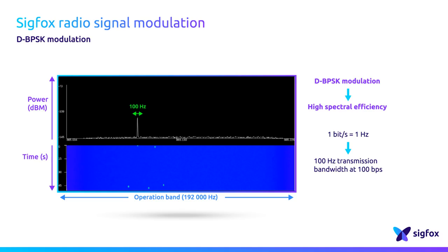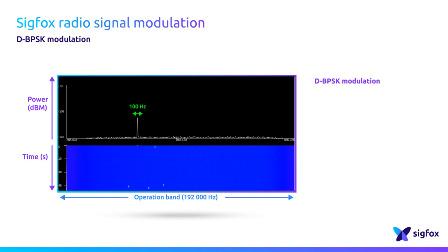DBPSK modulation brings a high efficiency in the spectrum. The SICKFOX protocol uses DBPSK modulation at 100 or 600 BPS for three main reasons. Firstly, DBPSK is easy to implement. Secondly, a low bitrate enables the use of low-cost components.